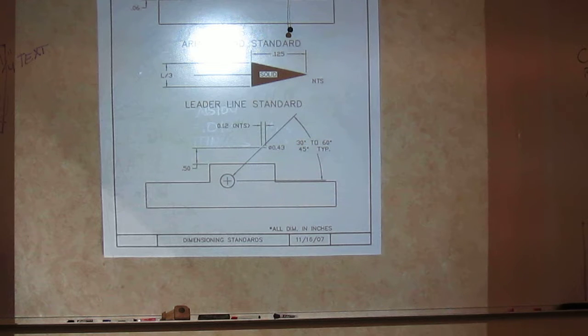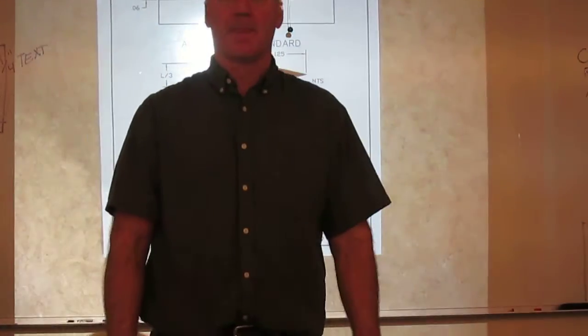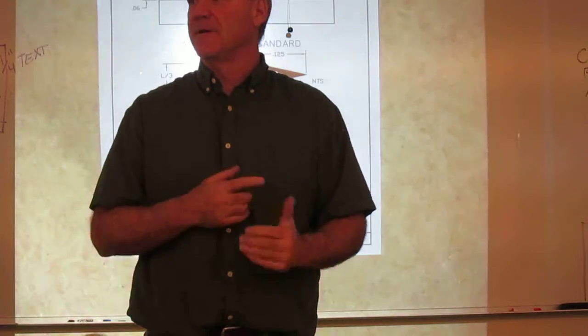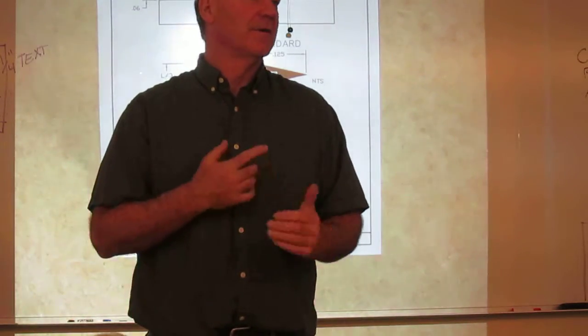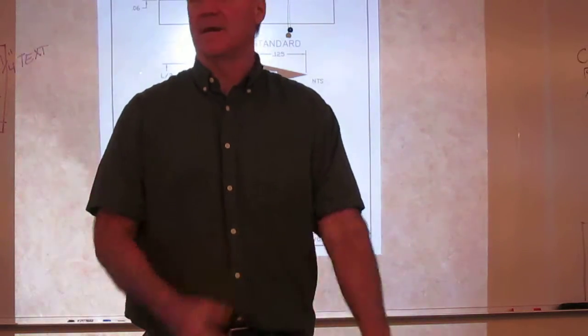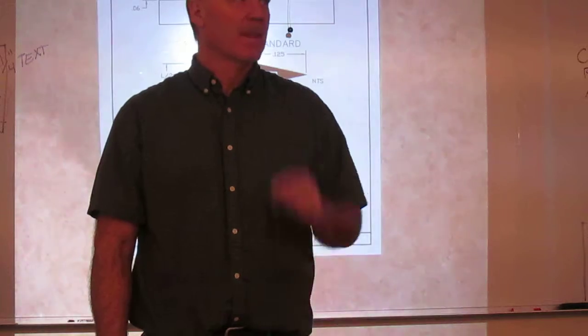So, this standard sheet right here, this is what we'll be using coming forward when you start placing your dimensions and extension lines. Again, if you have concerns on what those two lines are and the properties that go with them, go to chapter 10, alphabet of lines, and you can see that written there. All right. I think it's page 507.